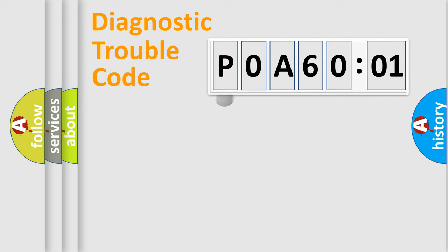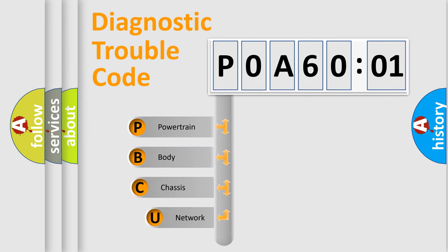Powertrain, Body, Chassis, and Network. This distribution is defined in the first character code.